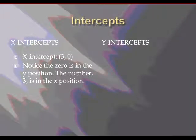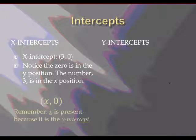Let's take a closer look at these points. The x-intercept, the example we just had was 3, 0. Notice the 0 is in the y-position. The number 3 is in the x-position. So an intercept would look like x, 0. So some number where the line crosses the x-axis, 0. X is present. X is in the point because it is the x-intercept. Y is 0.